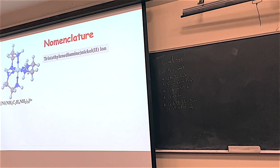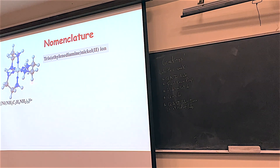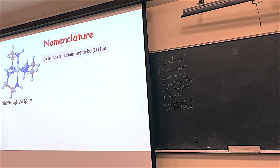Any questions on that? So if you have multiple ligands and one of them has a Greek prefix in it, how do you put on the normal Greek prefix alongside the alternate fixes? Let's say we only had two of these and we had two chlorines. Chloro is before ethylenediamine alphabetically, so you'd have dichloro, bis(ethylenediamine), nickel, whatever. It's always alphabetical. In this example, chloro comes before ethylenediamine — you just add the appropriate prefix. Good question.